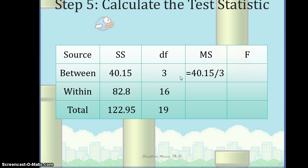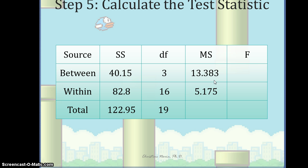For the mean squared between, we take the sums of squares between and divide by the degrees of freedom, giving us the average amount of variability due to group membership. Similarly, for mean squared within, we take the sums of squares within and divide by the degrees of freedom within. The mean squared between is 13.383 and the mean squared within is 5.175.